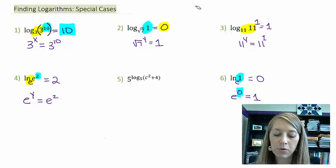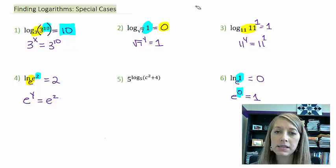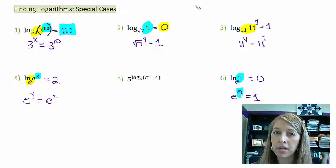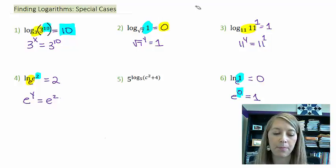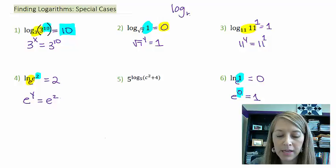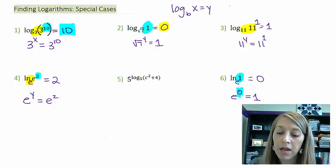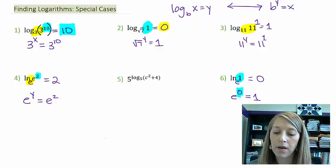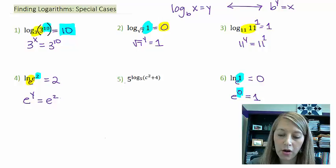In example five, which is the most difficult one. In these examples, we've actually been changing from log form into exponential form. In example five, we're actually going to change it from exponential form into log form to see what's happening. So let me write down my definition again. Log base b of x is equal to y. That is the exact same statement as b to the y is equal to x.